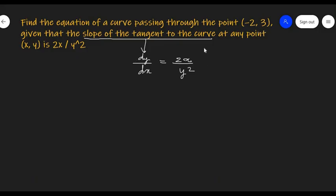So we need to first find the equation of the curve, then put the values of x and y as -2 and 3, and calculate the value of the constant. Finally we will get the solution, that is the curve passing through this point. Let's start.